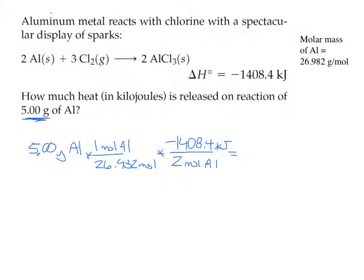You should be able to plug that into your calculators. How many significant figures are we rounding to? Three. So you should have negative 130 kilojoules.